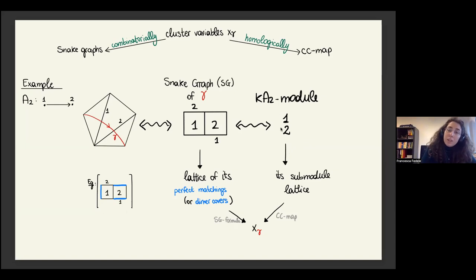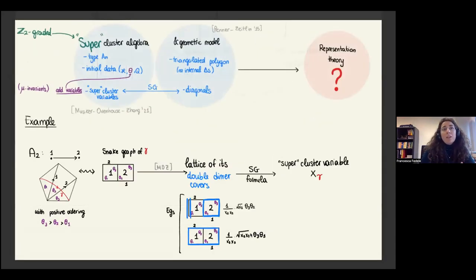Alternatively, you can look at the corresponding indecomposable module, in this case one-two, look at its submodule lattice which again consists of three submodules, and apply the CC map. We'll see a bit more in detail this later, and then you recover exactly the same cluster variable.